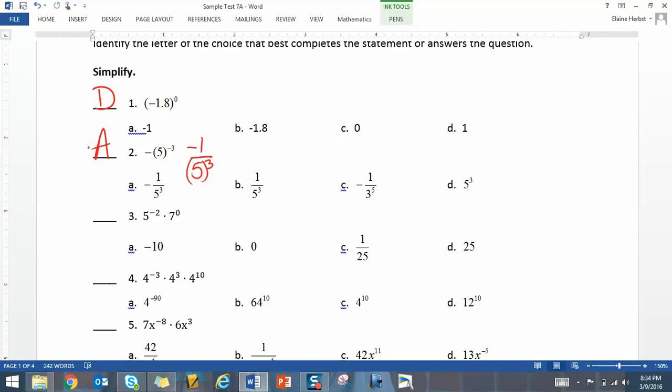For 3, we have 5 to the negative 2nd, so that's 1 over 25 times 1, so the answer is C.